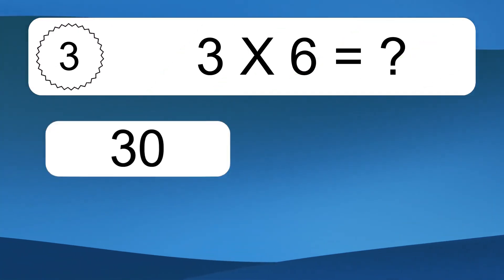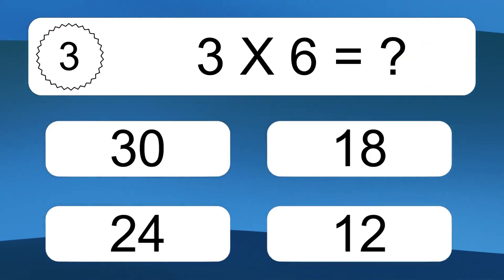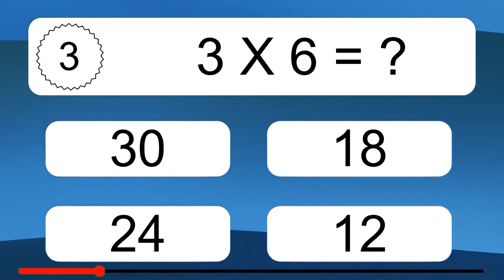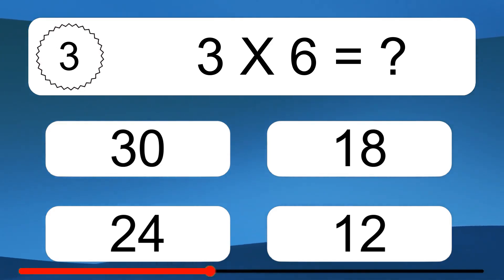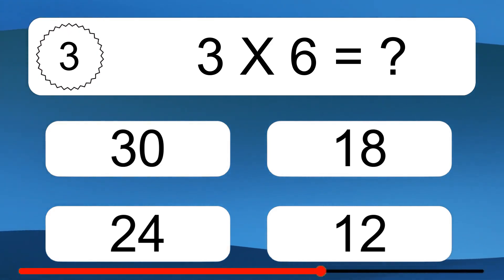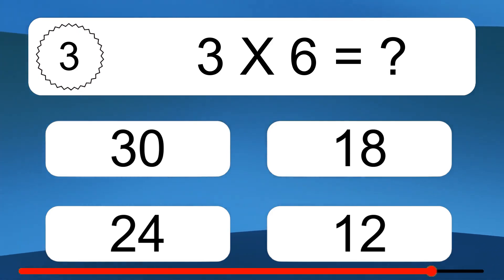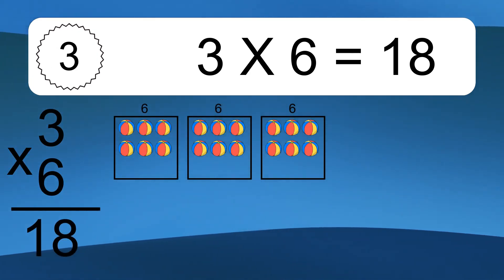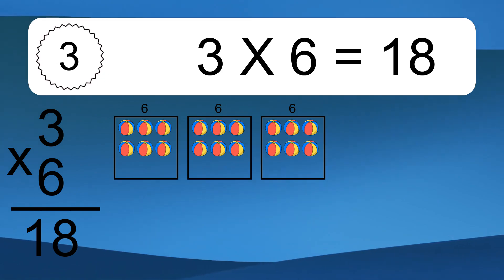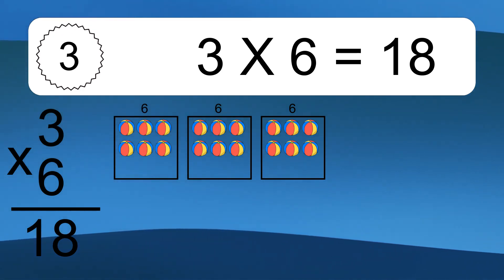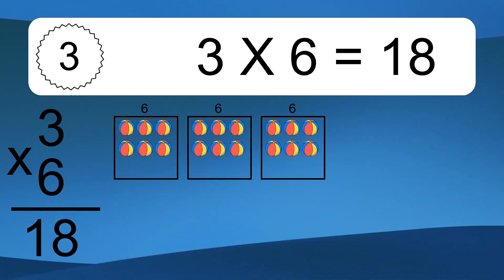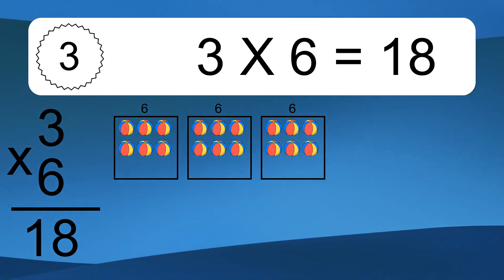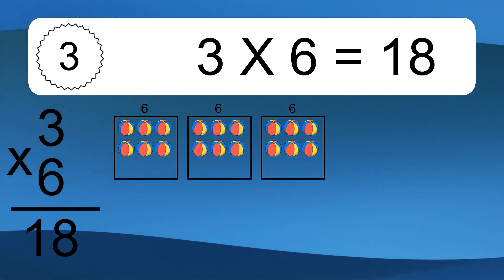3 times 6 equals what? 3 times 6 equals 18. We have 3 boxes, and each box has 6 colorful balls inside. If you count all the balls in all the boxes together, you will have 3 times 6 balls. This equals 18 balls.